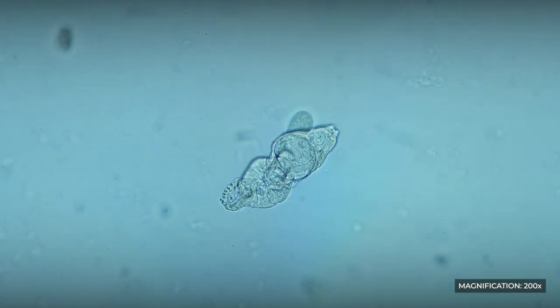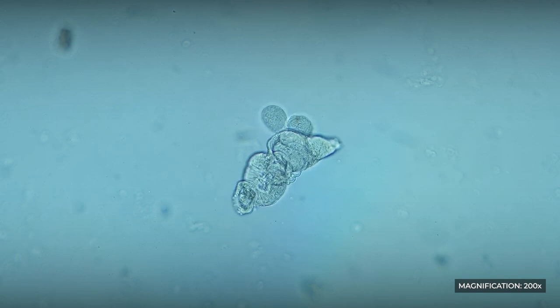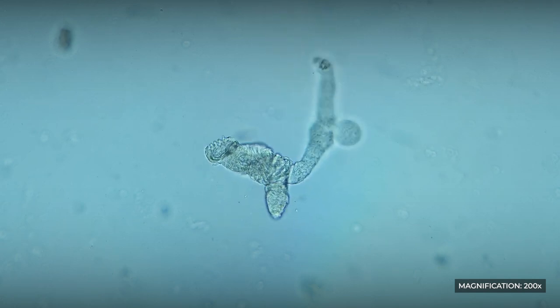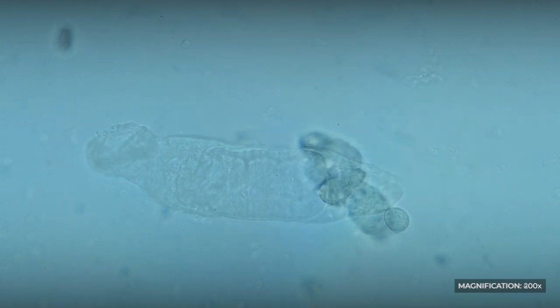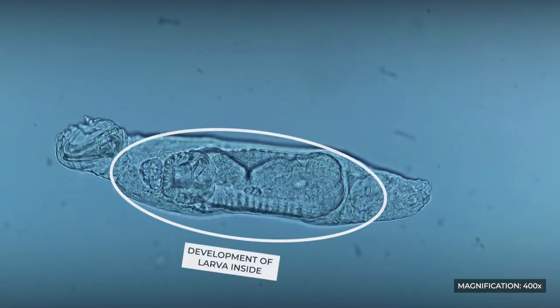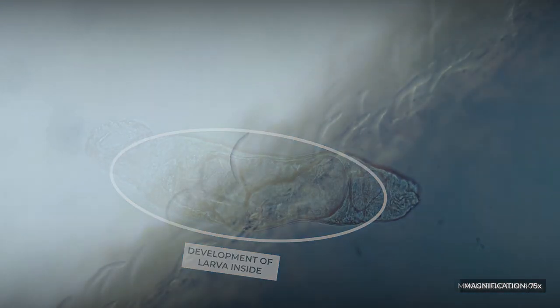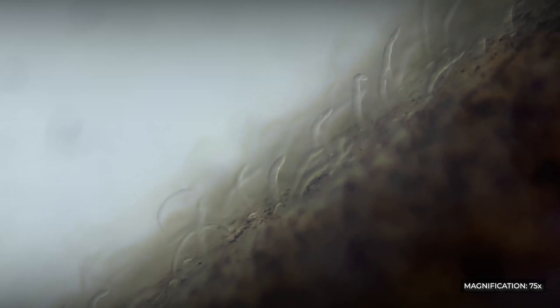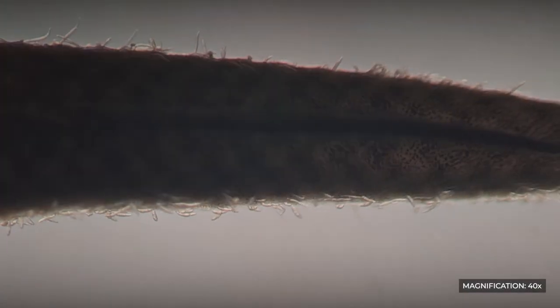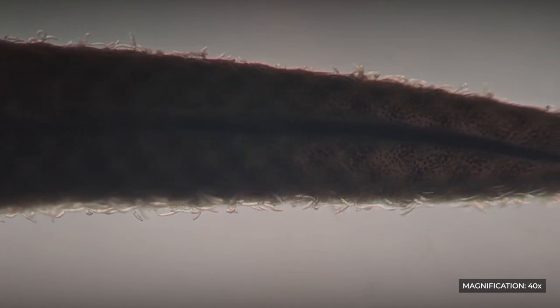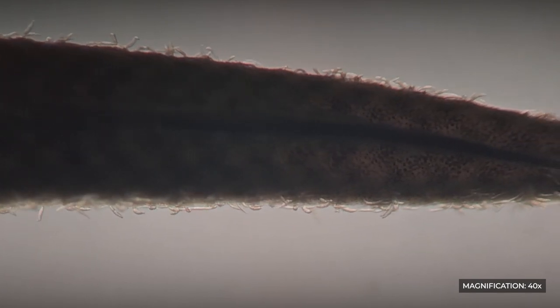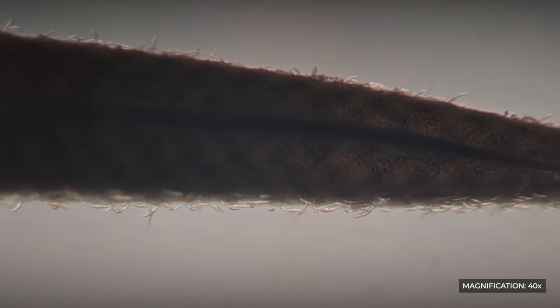Skin flukes are viviparous hermaphrodites, so it is often possible to observe the development of second-generation larvae inside the body of one worm. Gyrodactylus can undergo a significant increase in population density, covering the entire body of the fish. These parasites pose a particular threat to young fish, often leading to mass mortality in aquariums and ponds.